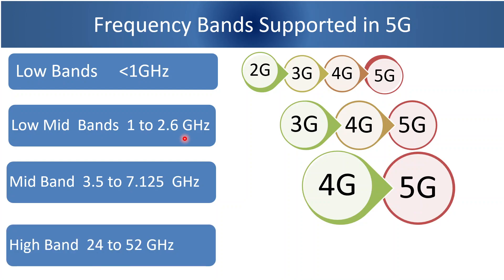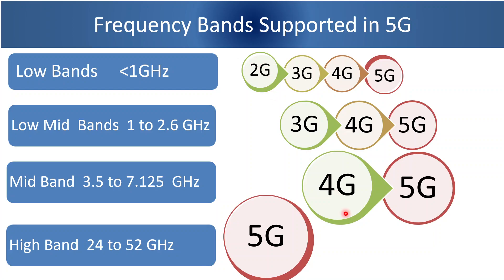High band frequencies are from 24 GHz to 52 GHz. These are new bands supported by 5G. 2G, 3G, and 4G do not support these high bands. These bands are also known as millimeter wave, as the wavelength of these frequencies is in the millimeter range.